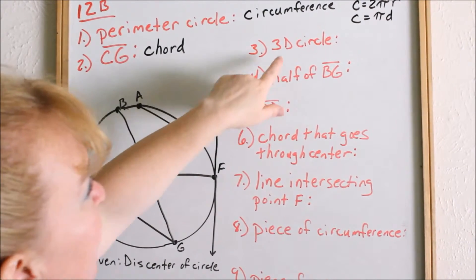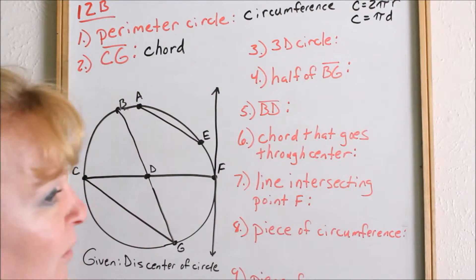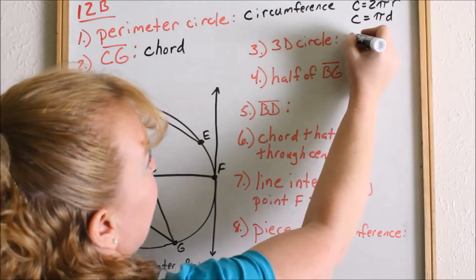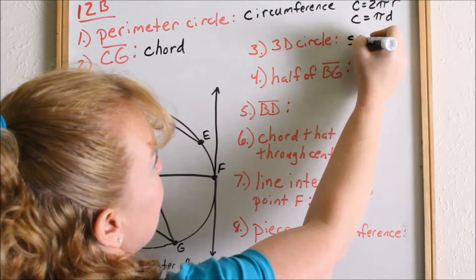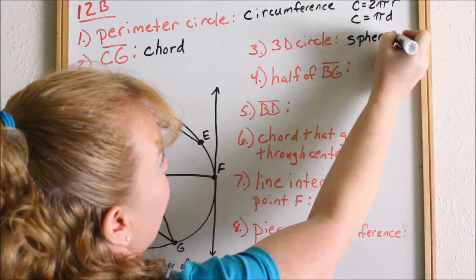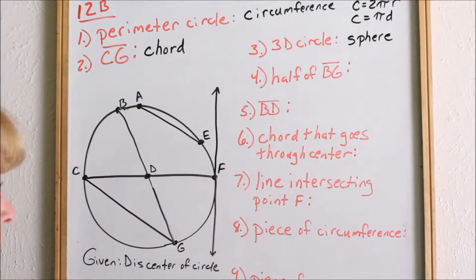Number three: what do we call a 3D circle? It's a sphere. A sphere is just a 3D circle, like a ball — a basketball, a volleyball.